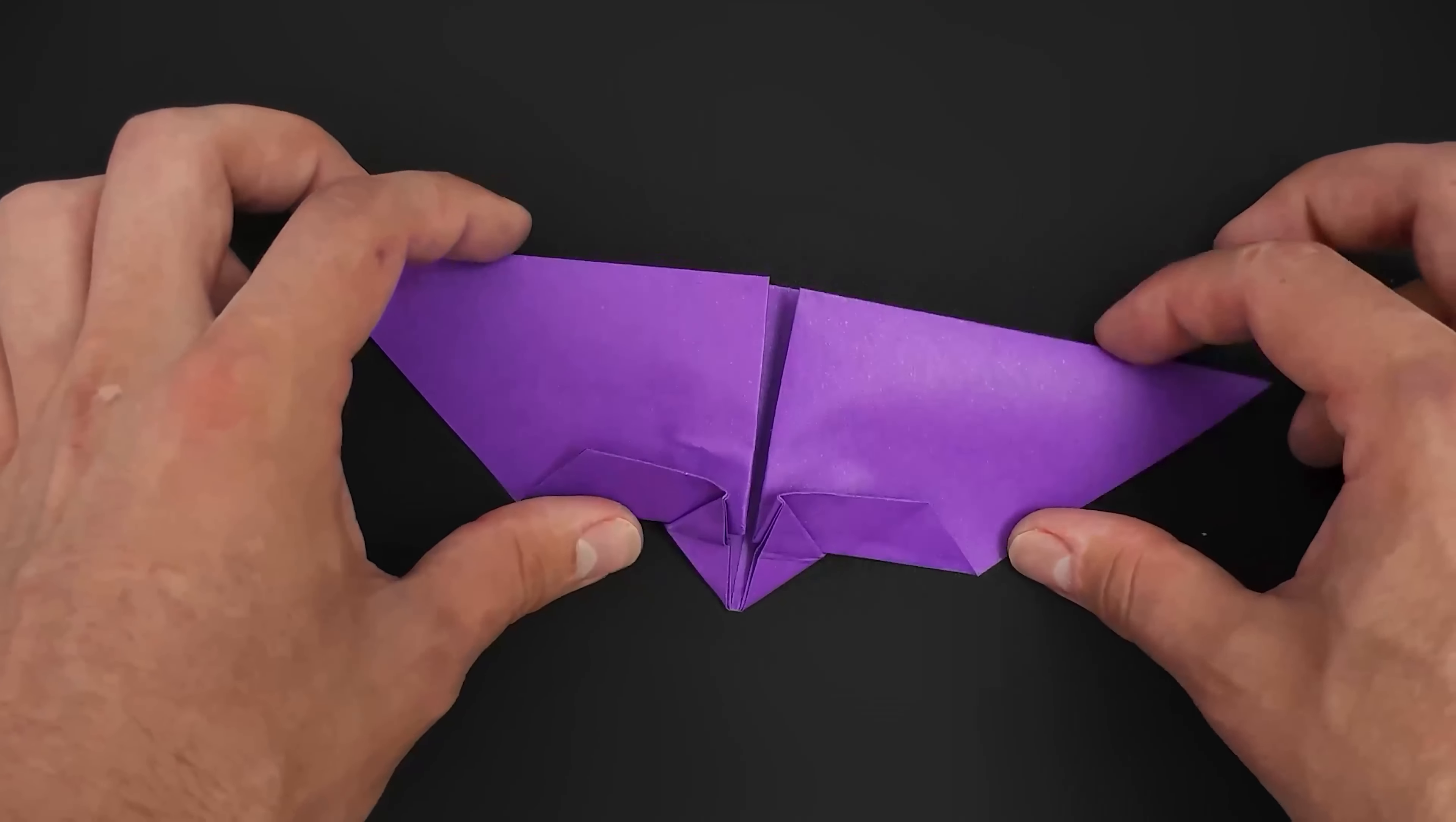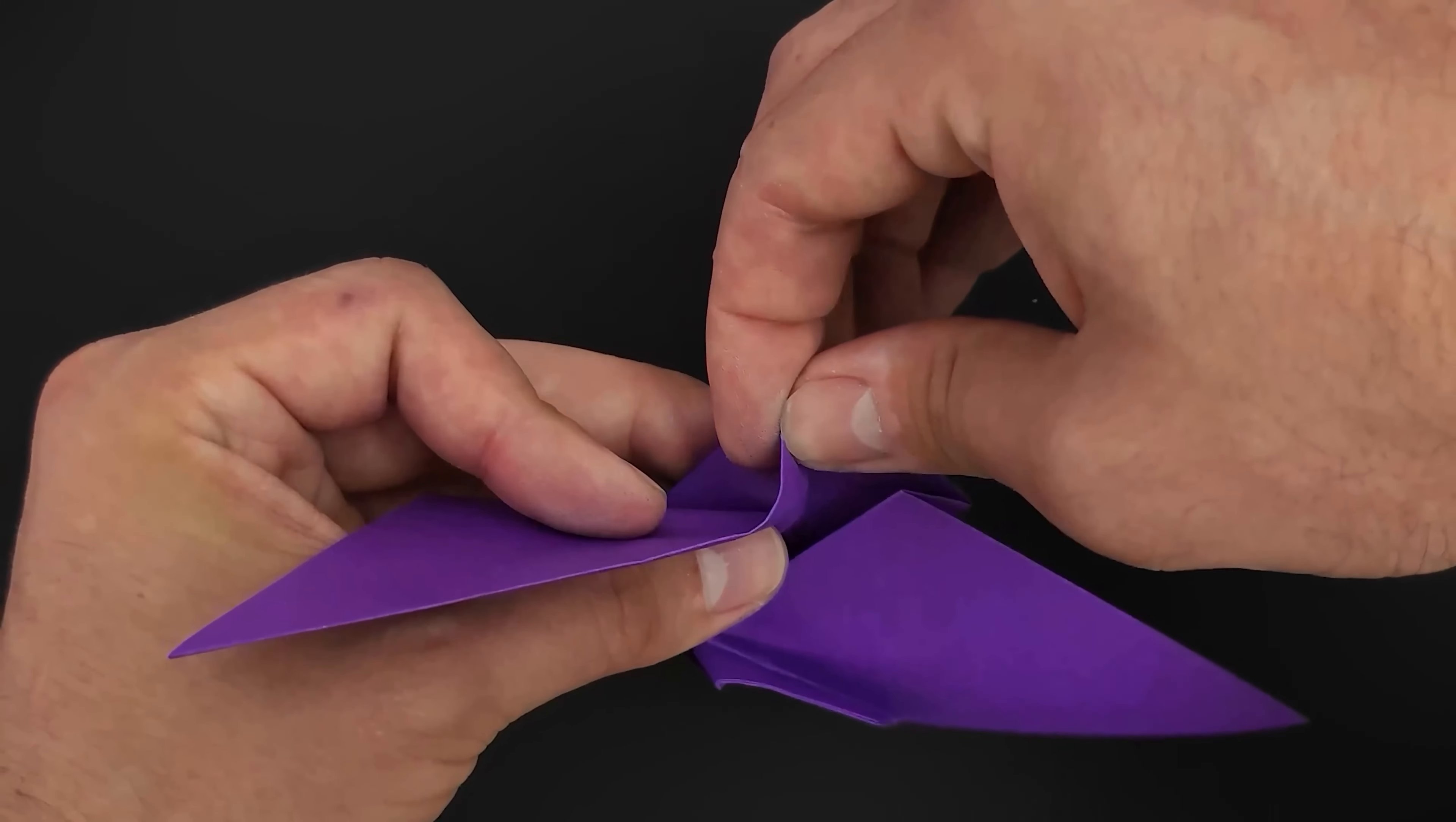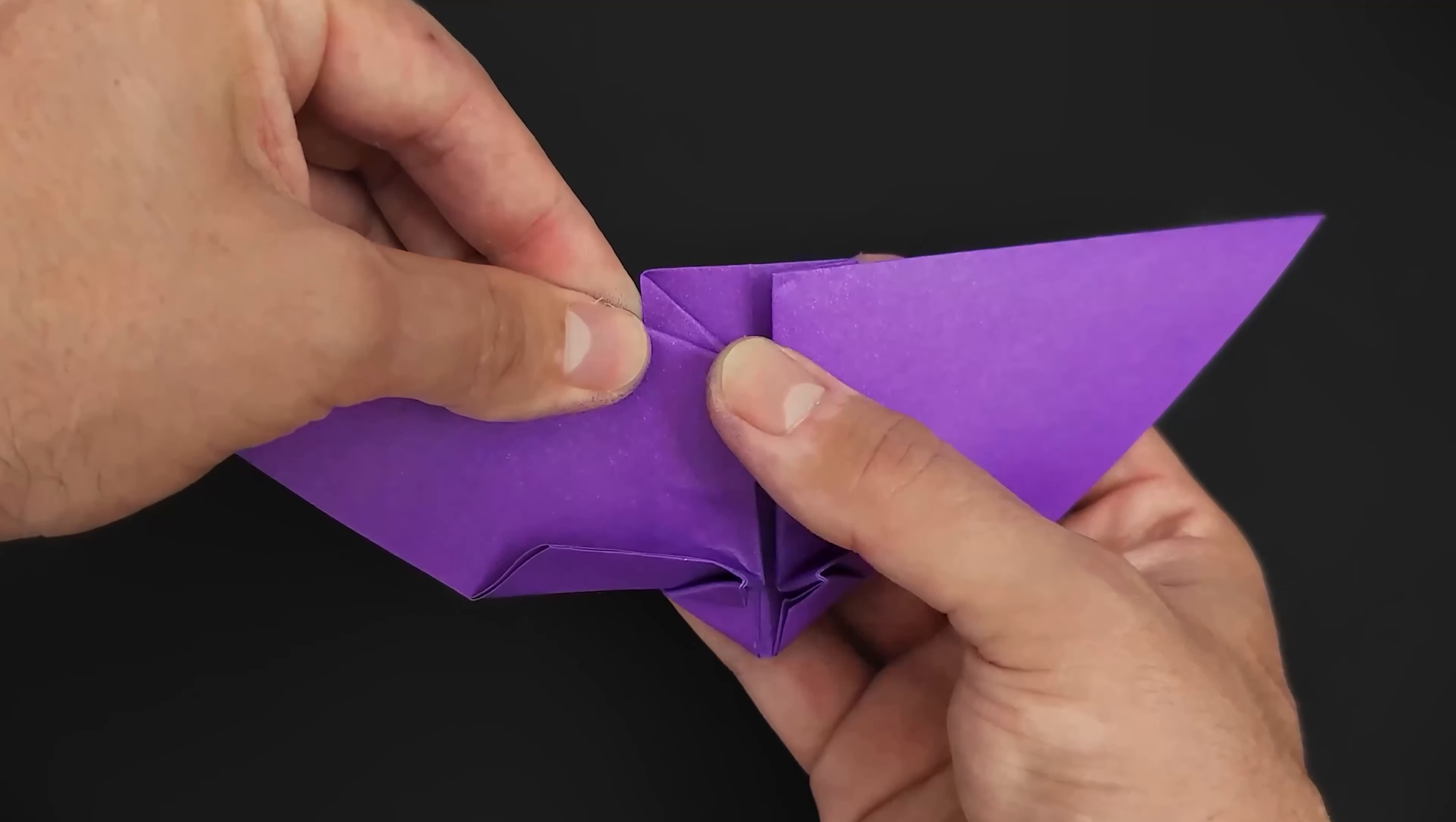Now, pay attention to the next step. Let's open the top layers. We can start from the left side this time. And we are going to bring this smaller edge here to this other edge on the side. After that, we are going to close the paper again, making a slightly larger diagonal crease at the front layer, like this.